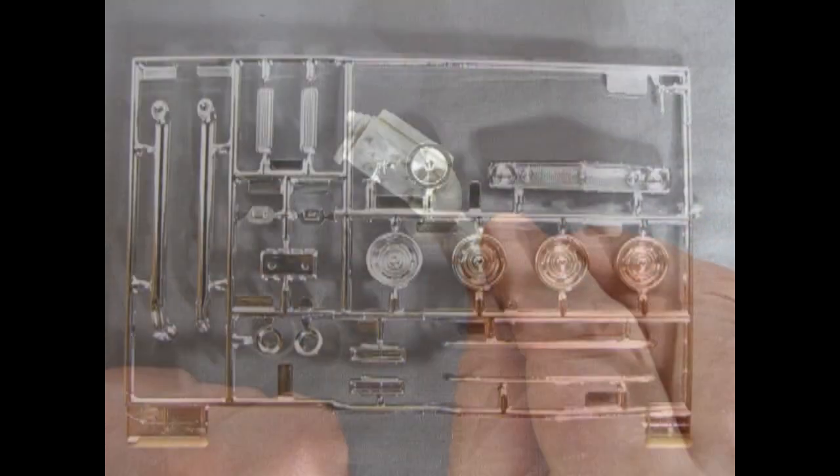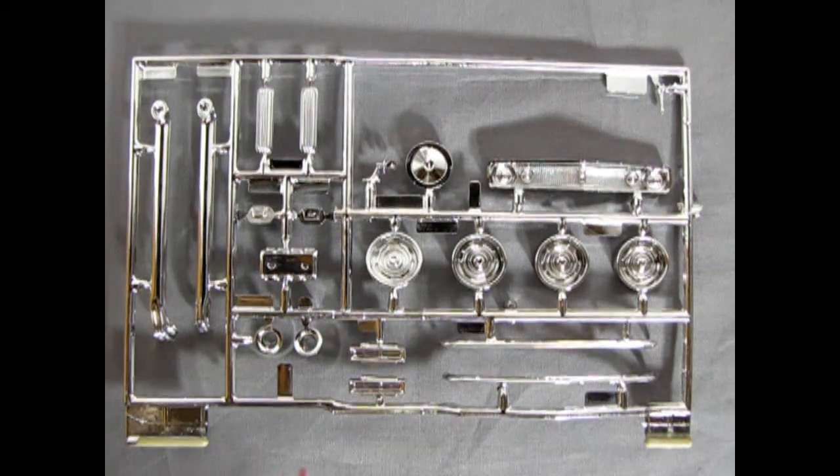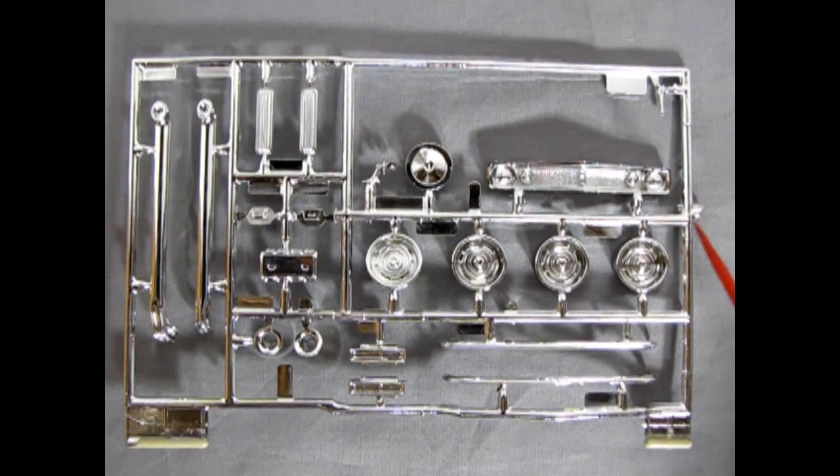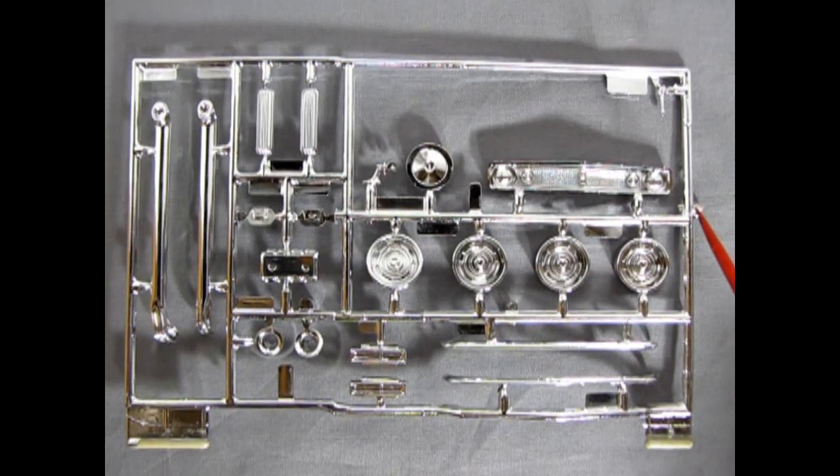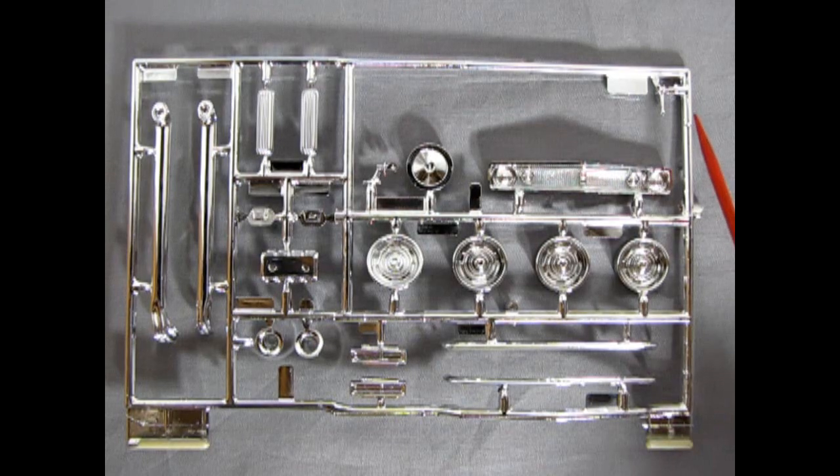Very nice. And now we've got my favorite piece of all the model kits, the chrome parts tree. Now, there's not too much chrome on this Camaro. I mean, after all, the Camaro was not noted for chrome. I mean, this isn't a 32 Duesenberg or something. However, you do get a gear shift lever.